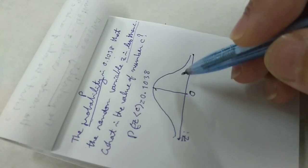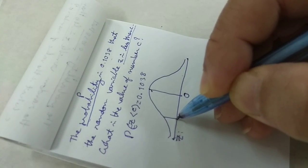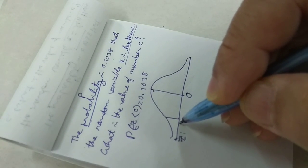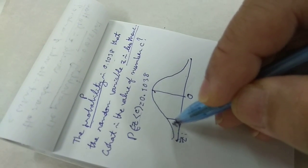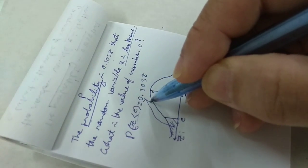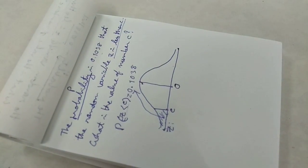Therefore, C cannot be positive. C must be a negative number. The area to the left of C must be 0.1038. So where is C?